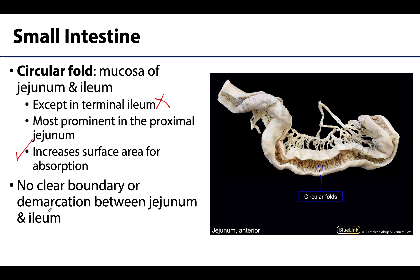When viewing externally or macroscopically, it is very difficult to differentiate the jejunum from the ileum. To differentiate between the two, we use location: structures within the left upper quadrant indicate the jejunum, while structures in the right lower quadrant indicate the ileum.